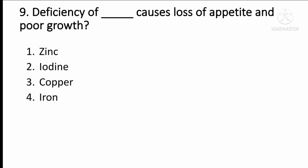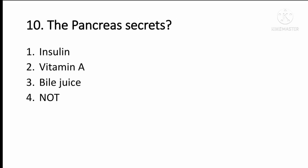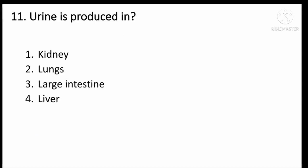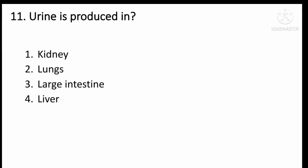Deficiency of certain nutrients causes loss of appetite and poor growth. The pancreas secretes certain substances. The urine is produced in the kidney.